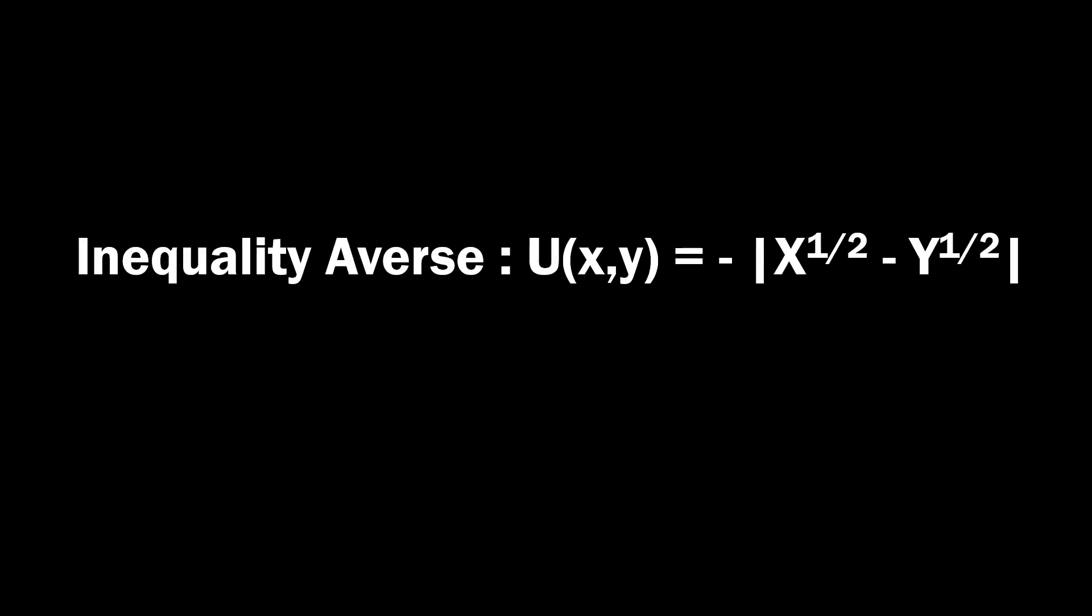Another social preference function we could look at would be an inequality averse social preference function. And here, what happens is that agents would maximize this equation here. Any difference between X and Y creates a larger negative number and thus is worse off. It creates a bad outcome for us. So we just want our two payoffs to be as equal as possible.